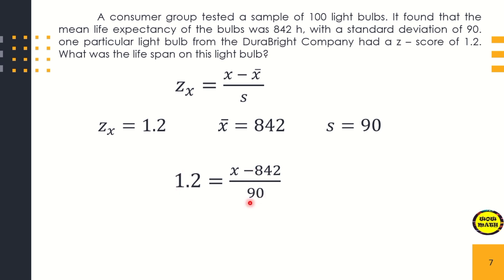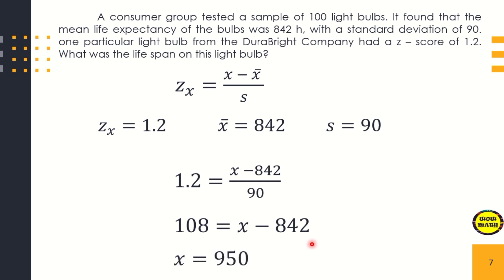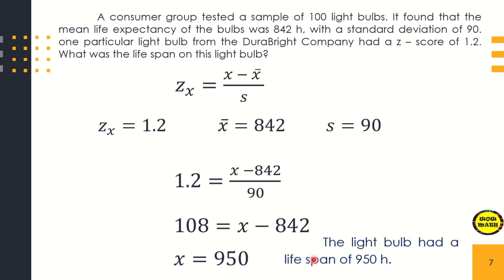We multiply both sides by 90: 90 times 1.2 equals 108, so 108 = X minus 842. Solving for X by adding 842 to both sides, X is equal to 950. Therefore, the light bulb had a lifespan of 950 hours.